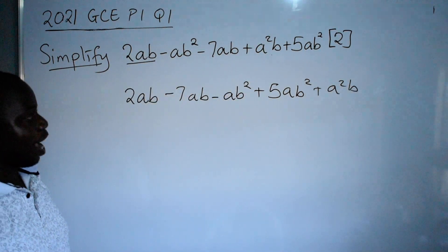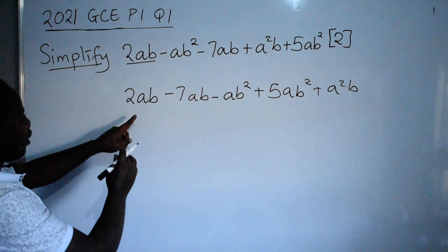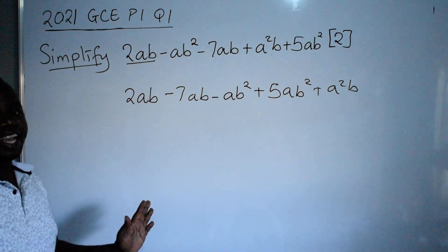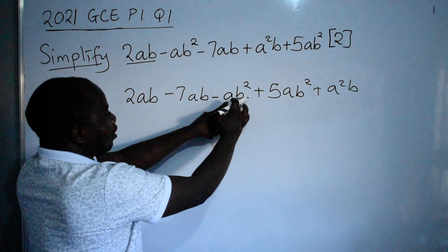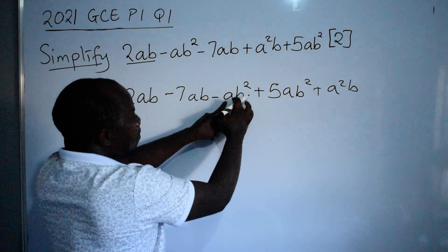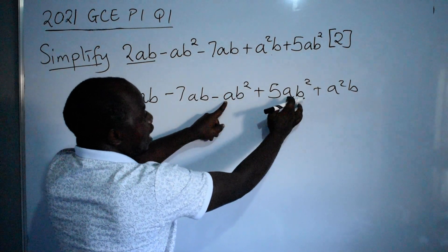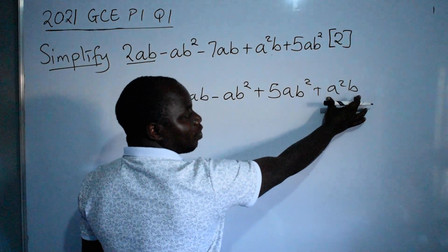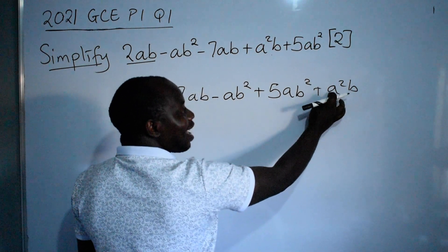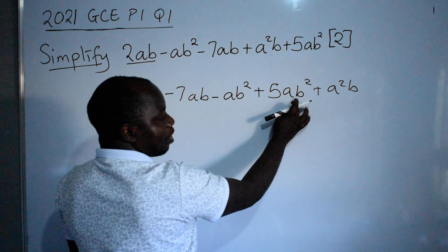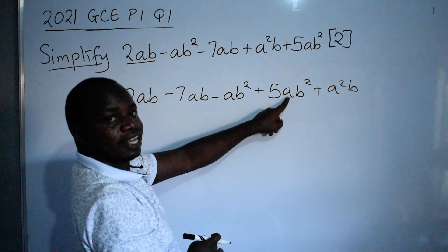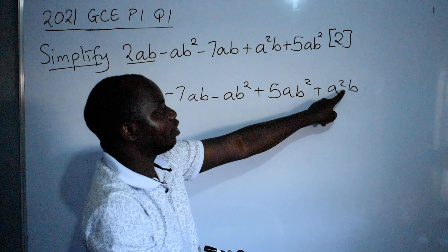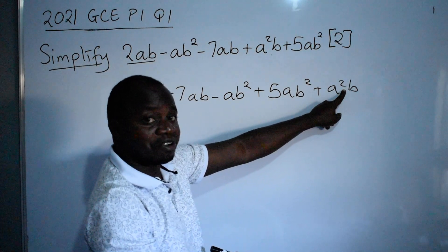I hope you are following. So now we have ab and ab — they are like terms. Then a squared b, ab squared, and ab squared — they are also like terms. This one, a squared b, is on its own and is different. How many a's are here? One. How many a's are here? Two. Are they like terms? No.